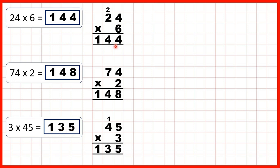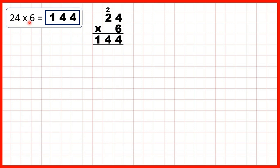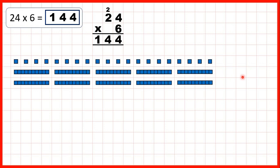Now let's take a closer look at these questions and see why this method works — why, if we get a two-digit answer, we write the first digit above the next place value column along, but if we don't have any more digits to multiply and we get a two-digit answer, we can just write that in our answer line. First, we had 24 times 6, so we can represent 24 with two 10s and four 1s. We're multiplying by 6, so we can show the 24 six times because we're multiplying by 6.